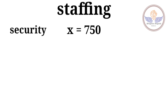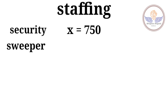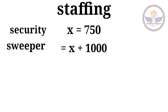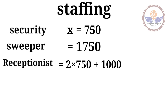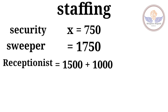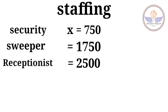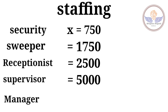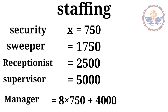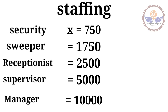So, security is 7,90. So, sweeper is 8,90. So, security is 8,90. So, receptionist is 2x plus 10. So, 2x is 8,50 plus 10. So, receptionist is 8,50. So, supervisor is 4x plus 2,90. So, 4x is 3,90 is 4,90. So, supervisor is 8,90. So, manager is 8x plus 4,90. So, 8x is 8,90 is 6,90 plus 4,90 is 10,90. So, this is the answer.